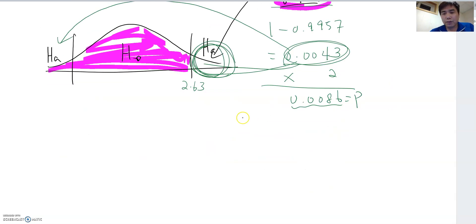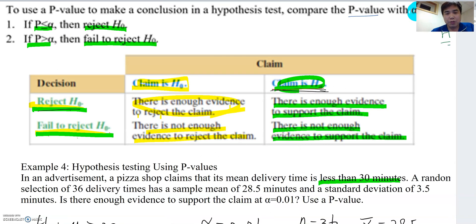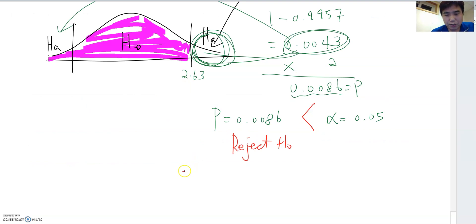Given p equal to 0.0086 and alpha equal to 0.05. Which one is greater? Yeah, definitely alpha is greater. If alpha is bigger than p, we reject H0. Right? And then where was the claim? The claim was on H0, right? If claim is H0 and then reject H0, then there is enough evidence to reject the claim. So therefore, for this question the answer, there is enough evidence to reject the claim. That will be the answer.